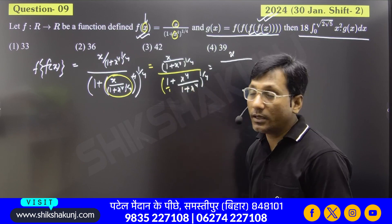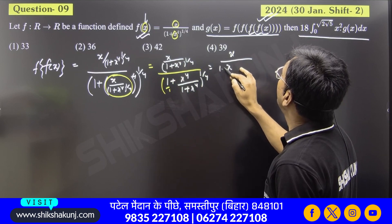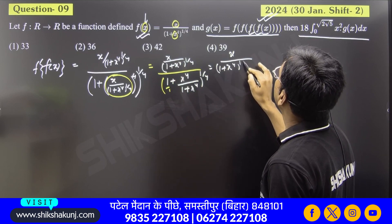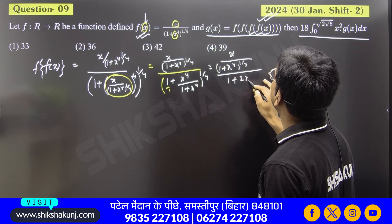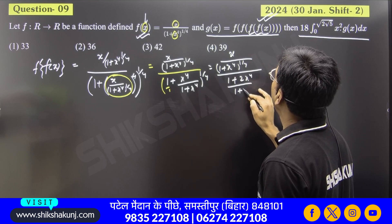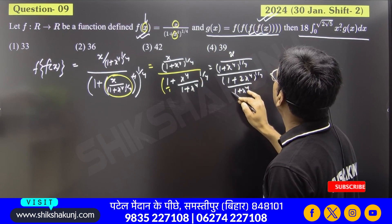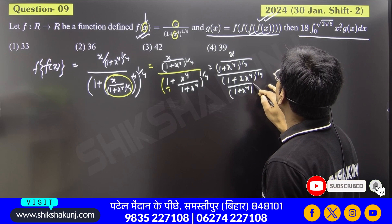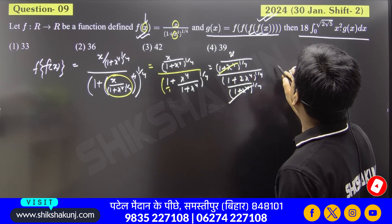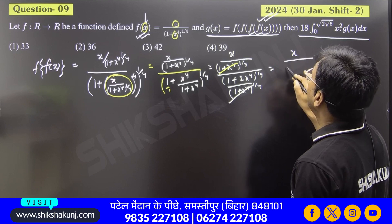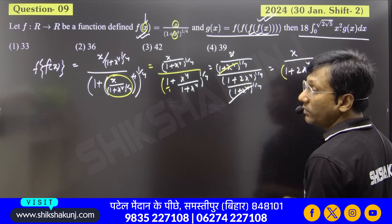Take the LCM and see how much it becomes: 1 plus x⁴, divided by 1 plus 2x⁴, with the whole power 1/4 multiplied. The 1/4 cuts, so we get x divided by (1 + 2x⁴) to the power 1/4.